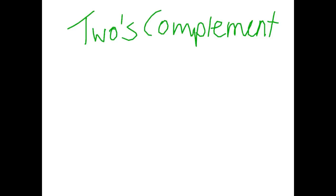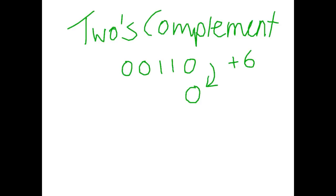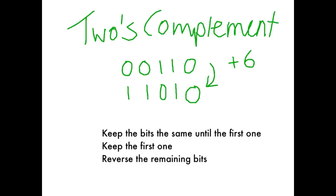So let's say for example we have the number 6. I'm going to give this to you in 5 bits: 0, 0, 1, 1, 0 — and that is a positive 6. To take a 2's complement I have to find the negative representation of 6. The rule is: you keep all the bits the same until the first 1, keep that first 1, and change everything after that.